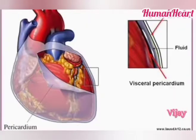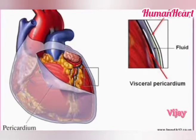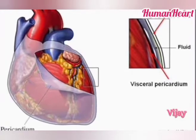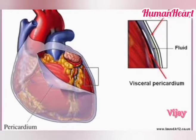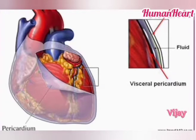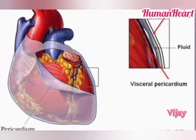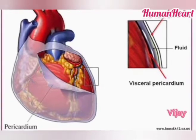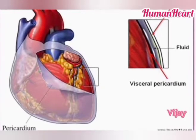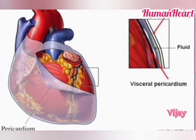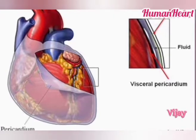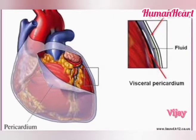The pericardium is a double-walled sac. It contains pericardial fluid, which helps with lubrication. It reduces friction during heartbeat and also protects the heart from mechanical injury.